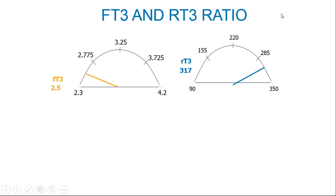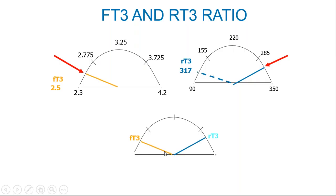Now let's look at the free T3 versus reverse T3. Free T3 is the accelerator of metabolism; reverse T3 is the brake. The same rule applies: wherever the free T3 is within its range is where the reverse T3 should be within its range. In this patient, free T3 is way down and reverse T3 is relatively high. That graph explains why this patient had so many symptoms even though total T4 was even higher than optimal and TSH was fine.